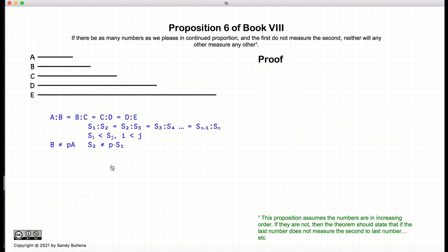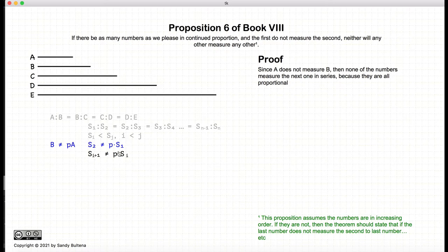So let's begin our proof. First we have that S of I is not measuring S of II. But we do have that S1 to S2 equals S2 to S3, and S3 to S4.